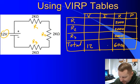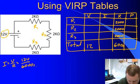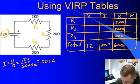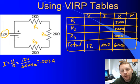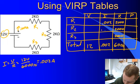Any time I know two items in the same row, I can figure out the other two using Ohm's Law or the power equation. For total current: I = V/R, so 12 volts over 6,000 ohms gives 0.002 amps. In a series circuit, the current anywhere is the same, so I can fill in 0.002 amps for R1, R2, and R3.